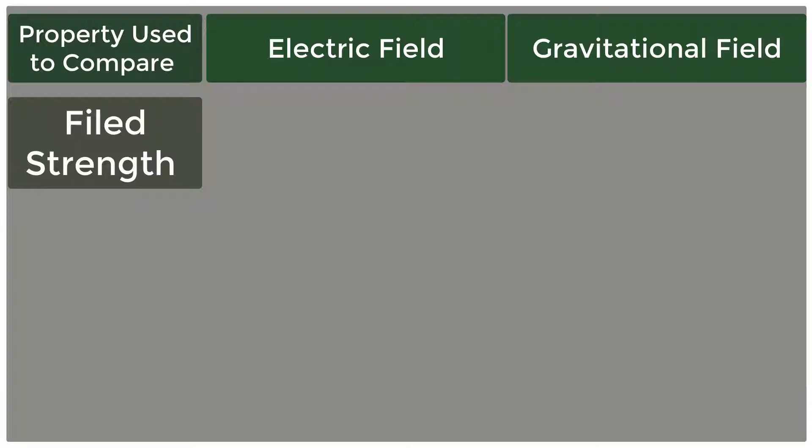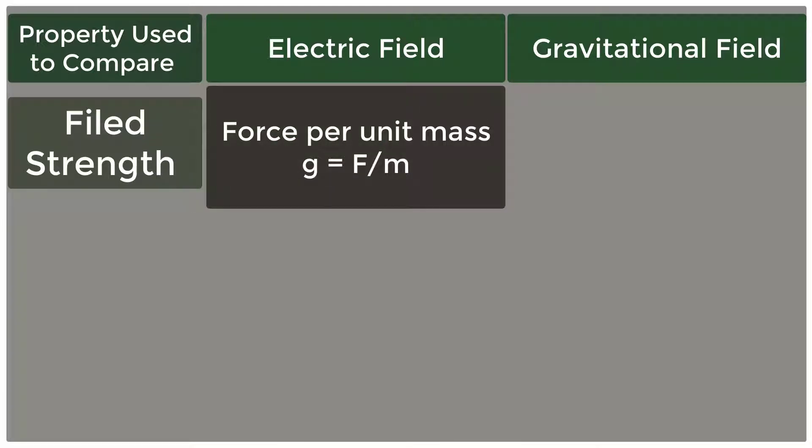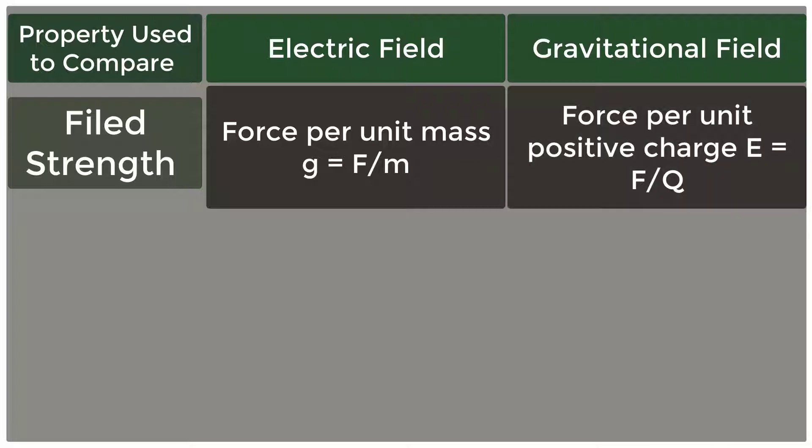Field Strength: For electric field, force per unit mass g equals F over m, whereas for gravitational field, force per unit positive charge equals F over q.